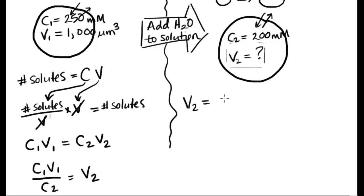So using the numbers for our case, we have C1, 250 millimolar, times V1, original volume of our cell, 1,000 micrometers cubed, divided by C2, the concentration here at the end, so 200 millimolar.